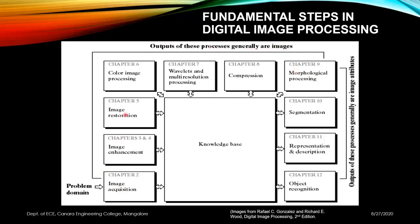Following acquisition, we have enhancement, restoration, wavelength and material resolution processing, compression, and morphological processing. The outputs of these processes are generally images — input is an image and output is also an image. The remaining blocks — morphological processing, segmentation, representation and description, and object recognition — generally output image attributes.